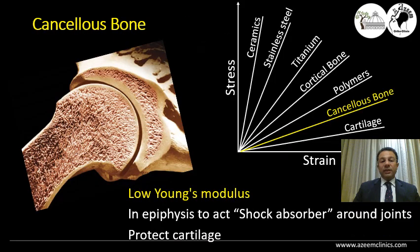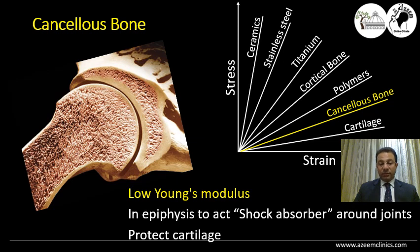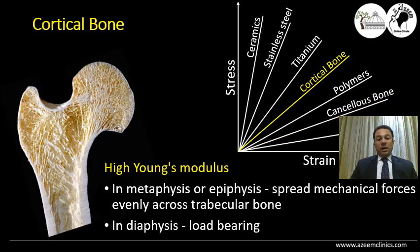If we look at the cancellous or spongy bone, we will find that it has a low modulus of elasticity — that means it deforms rapidly to low stresses. That's why it's located in the epiphysis: to deform and act as a shock absorber, protecting the overlying cartilage from forces exerted, taking most of the forces and deforming, preventing these forces from reaching the cartilage and causing injury.